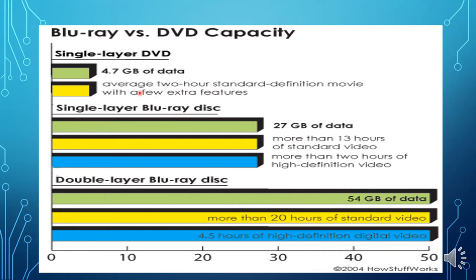Here a figure shows the comparison between DVD and Blu-ray disc. A single layer DVD (DVD-5) stores an average two-hour standard definition movie with a few extra features at 4.7 GB capacity. A single layer Blu-ray disc stores 27 GB of data — more than 13 hours of standard video or two hours of high definition (1080p) video.